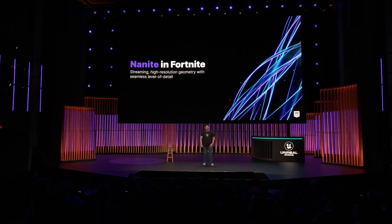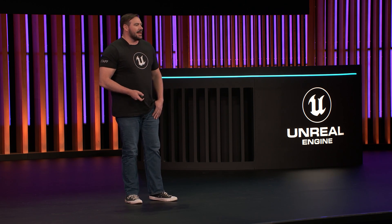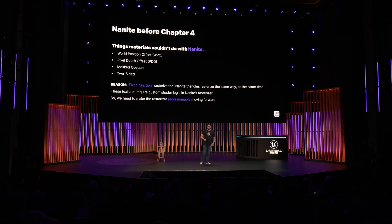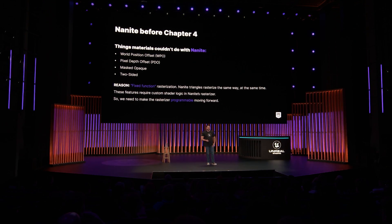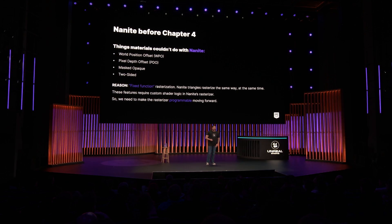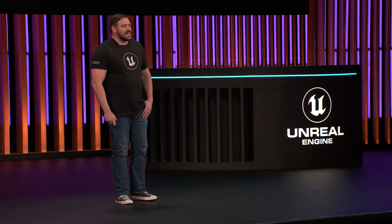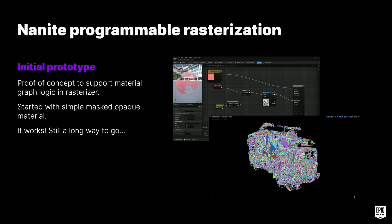Next, I'll cover how our team helped update the geometric detail of Fortnite Chapter 4 using Nanite. At the time we started on Chapter 4, Nanite materials were missing support for world position offset, pixel depth offset, masked opaque, and two-sided. This is because Nanite's rasterization was fixed-function — all triangles rasterize the same way and at the same time. These features require custom logic in the rasterization shader, so we needed to make the rasterizer programmable. We built an initial prototype to change Nanite's rasterization architecture to support material graph logic, starting with a simple masked material. The prototype was successful but there was a long road ahead to make it production-ready and efficient.